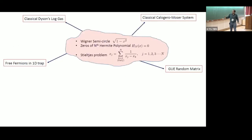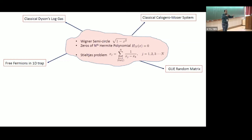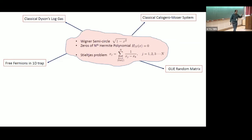The Wigner semicircle law: if you take zeros of Hermite polynomials and make a density out of them, you will see that it's also a semicircle. Take 100 zeros of a Hermite polynomial and compute something like one-over-inter-particle-distance — it looks like a semicircle. The zeros of the Stieltjes problem are also a semicircle. So there's a deep connection between these things and free fermions in 1D traps and random matrix theory.